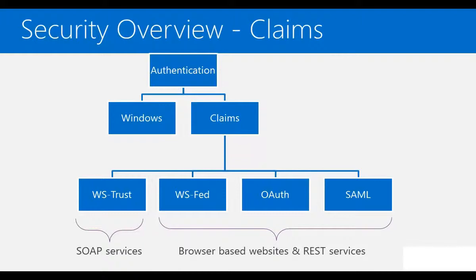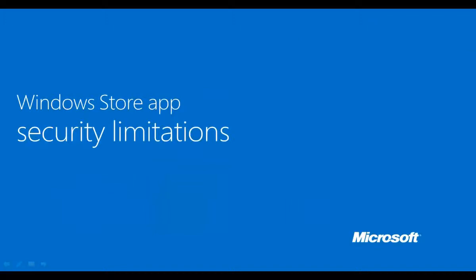WS-Trust is used to authenticate and access SOAP-based services, while WS-Federation is used to authenticate browser-based websites. SAML 2.0 is again used for browser-based websites, while OAuth is used to authenticate both REST services and browser-based applications. OAuth stands a little different from other claims authentication mechanisms, as it is primarily meant for third-party application authorization, but can also be used for end-user authentication.